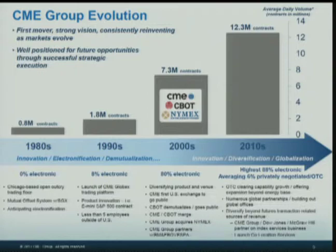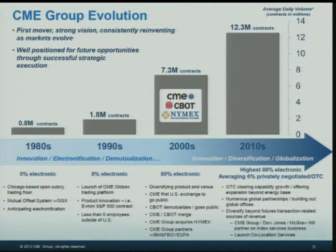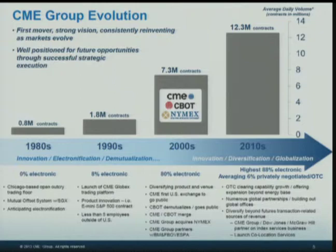One of the interesting challenges presented by the industry is the electronification of our markets. Back in 2000 we averaged roughly 800,000 contracts a day, but thanks to electronification and a series of vertical mergers between CME, CBOT, and NYMEX, we've grown essentially exponentially — from roughly 800,000 contracts a day in the early 80s to averaging over 12 million contracts a day.